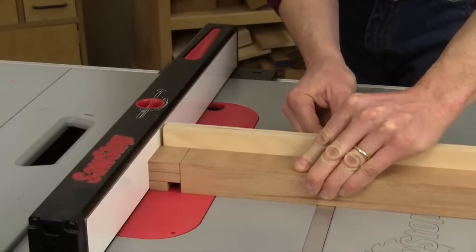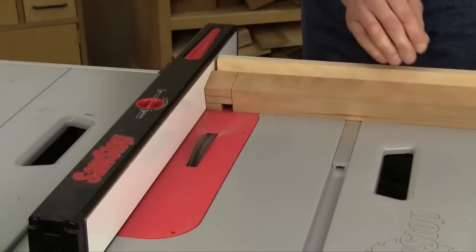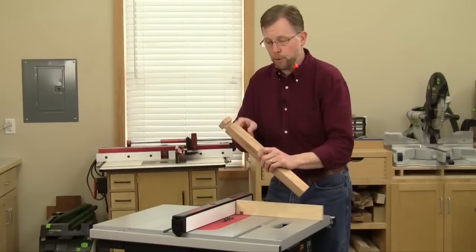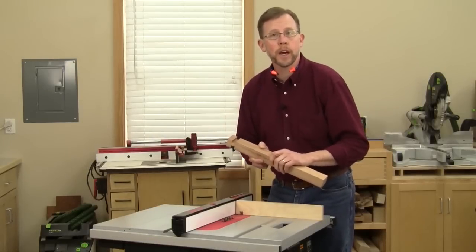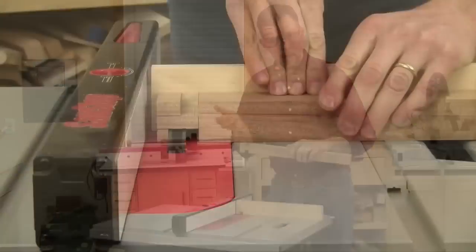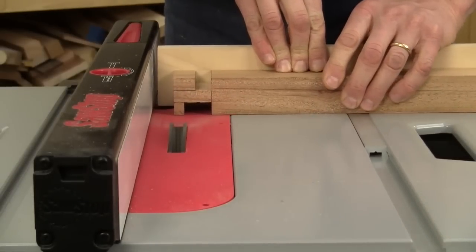Make the long shoulder cuts first in two passes over the dado blade, flipping the workpiece between passes. With these first two long shoulder and cheek cuts made, you're ready to hog away the rest of this cheek waste and you can do that by repeating the cutting process.